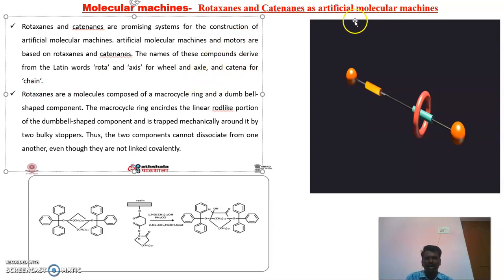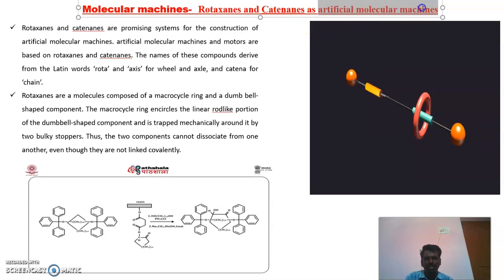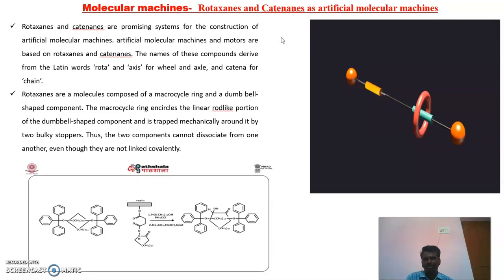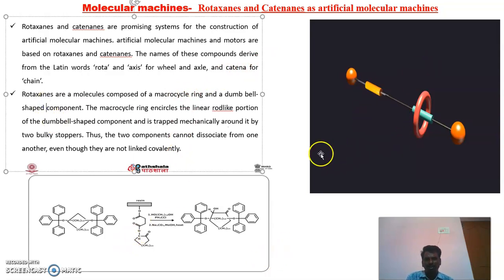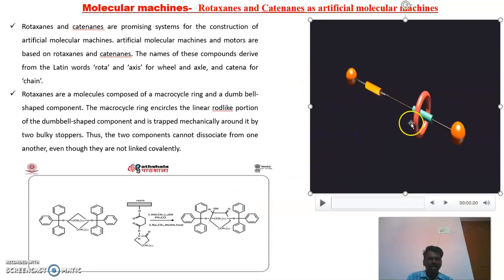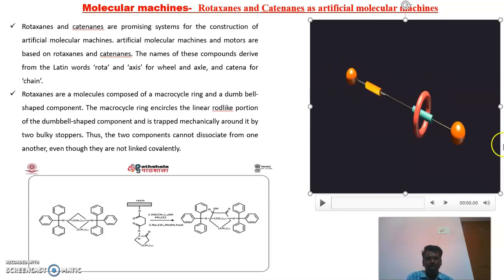These are artificial molecular machines. They are not natural; we make these artificial molecular machines to compensate for the failure of biological functions. If any biological function has failed because of natural machines, we can implement these artificial molecular machines to carry out that function. In the rotaxane structure, two dumbbells are at the corners of a rod, and one macromolecular chain is placed between these two dumbbells. The two dumbbells do not allow the chain to exit — the chain is always locked between the two dumbbells.